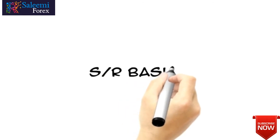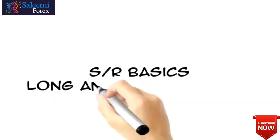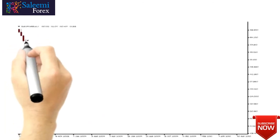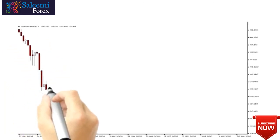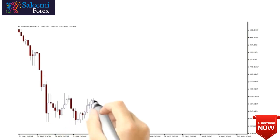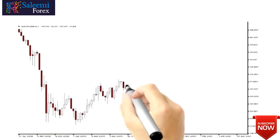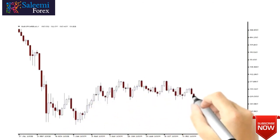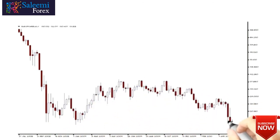In a previous lesson, we mentioned that when trading in Forex, we try to buy at support, the bargain price, and sell at resistance, the full or list price.